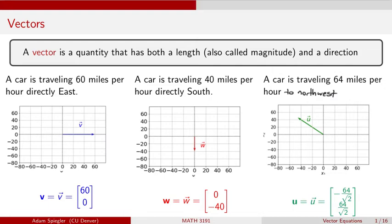These three examples are examples of vectors in two dimensions. We have east, west, north, south. So we have two components to each of these vectors.